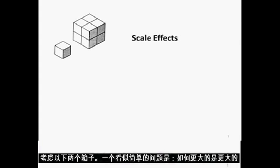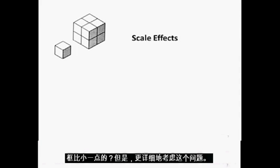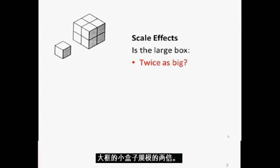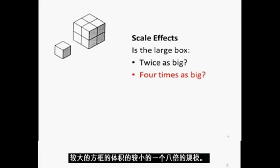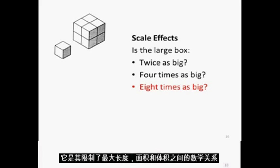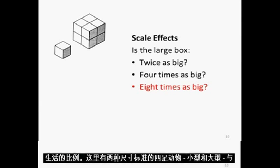Scale effects provide part of the answer. Consider these two boxes. A seemingly simple question is: how much bigger is the larger box than the smaller one? If the boxes are measured by the length of their sides — their linear dimensions — the larger box is twice the scale of the smaller box. The area of the larger box is 4 times the scale of the smaller box, and the volume of the larger box is 8 times the scale of the smaller one. As any object increases in size, its volume increases quicker than its area, and its area increases quicker than its length. It is this mathematical relationship between length, area, and volume which limits the maximum scale of life.